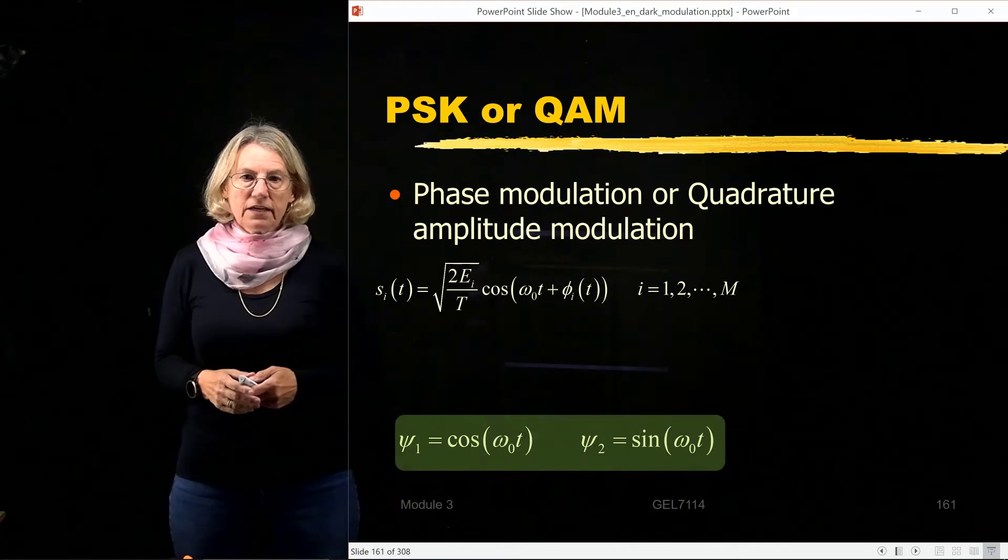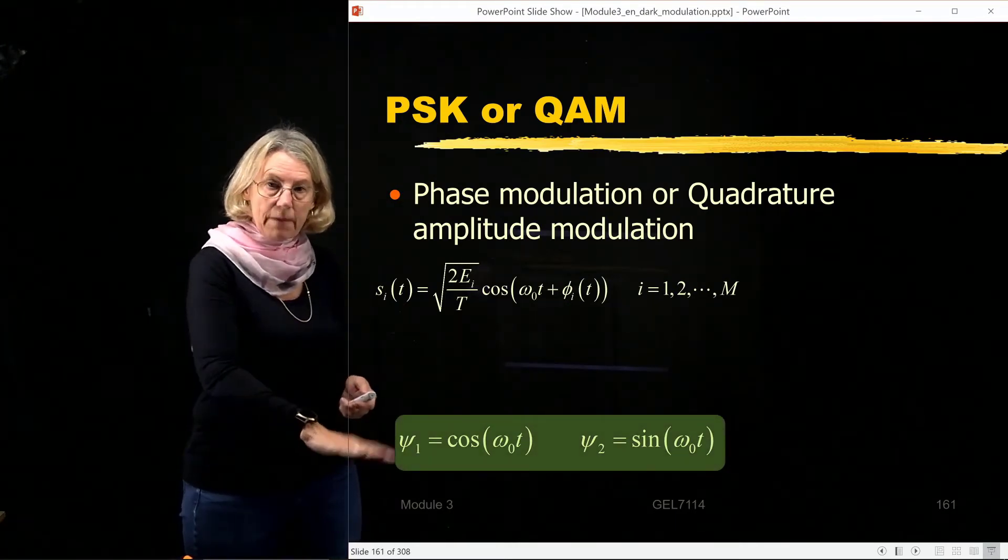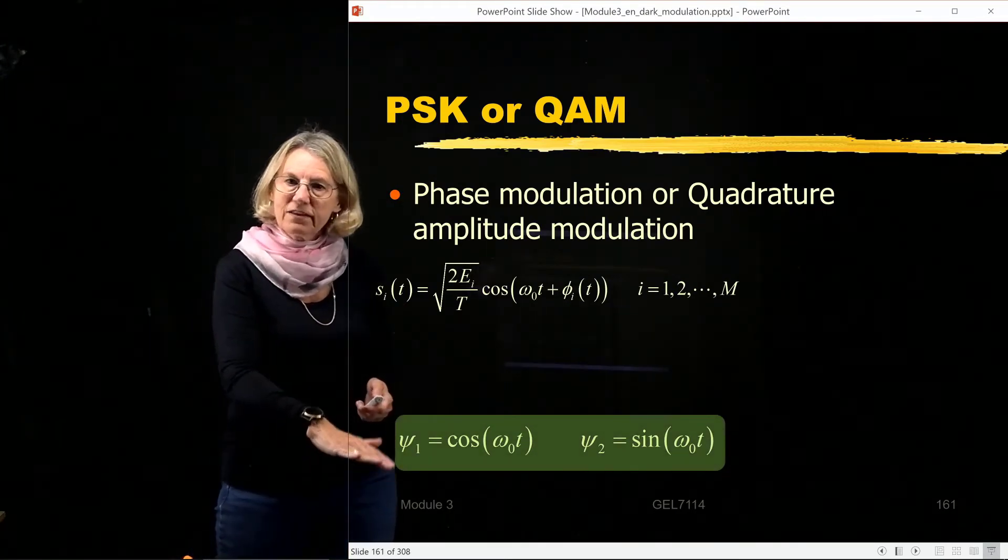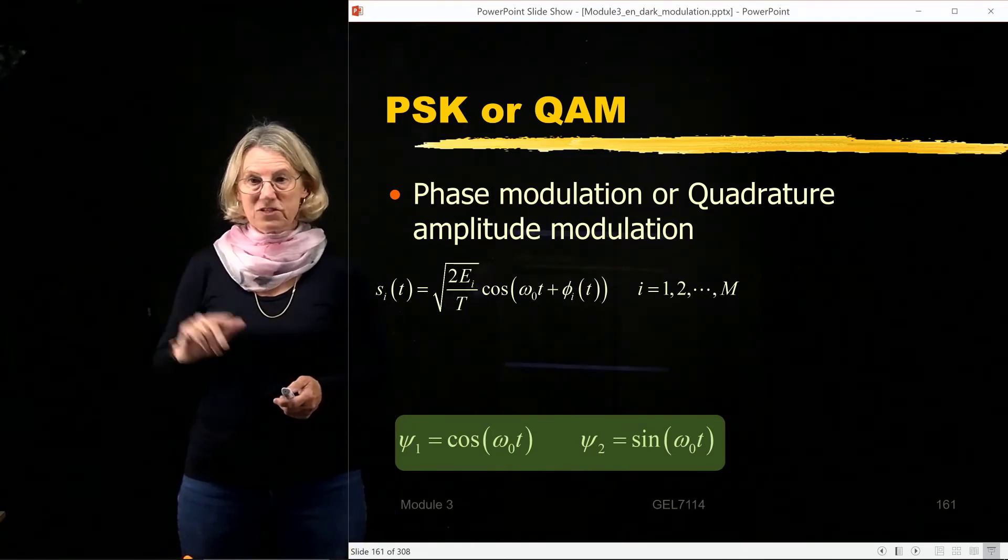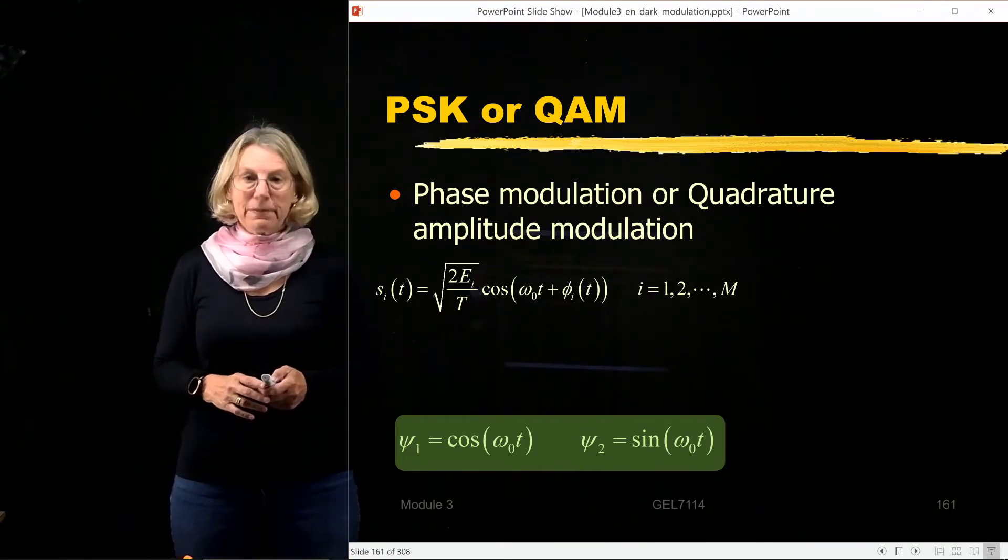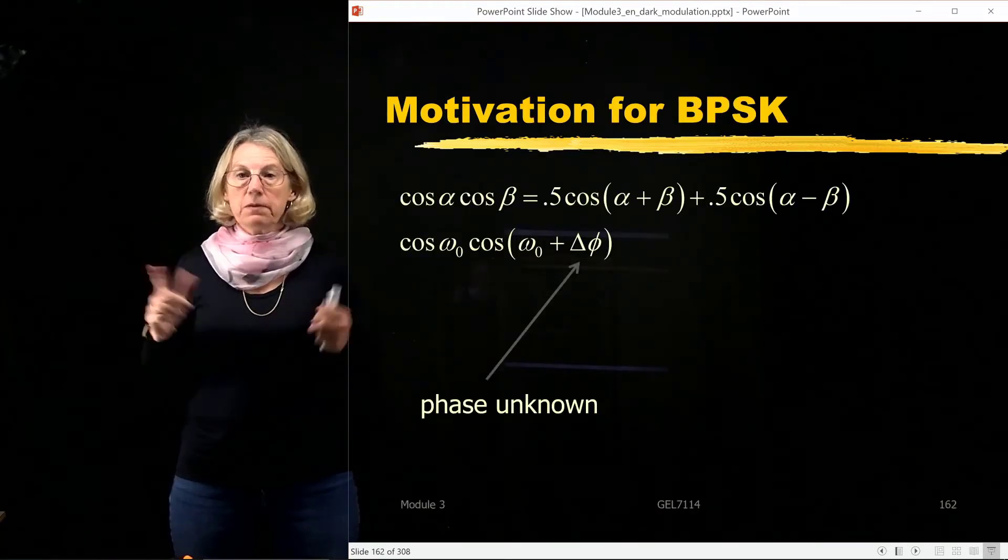And in these cases, remember, we're going to assume that the phase is actually unknown. It's not necessarily the same as the transmitter and the receiver. So what happens in that case?